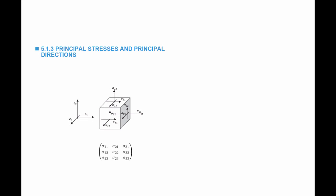The stress matrix is symmetric: σ21 equals σ12, σ31 equals σ13, and σ32 equals σ23. Looking at the matrix, these off-diagonal pairs are equal to each other.